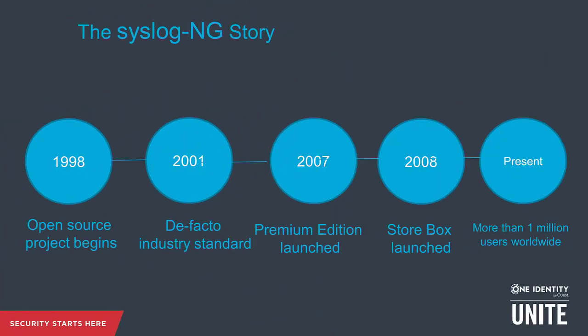And that brings us to our part in this story. SyslogNG has been there since the very beginning. Starting out as a project by a Hungarian grad student, he built SyslogNG back in 1998. He and his partners formed Balabit and introduced the open source version of SyslogNG, which was widely accepted around the world and grew to become the de facto industry standard. By 2007, the Premium Edition was introduced, and then in 2008, SyslogNG Storebox — an appliance log management device that runs SyslogNG PE at its core — was introduced. In 2018, Balabit was acquired by One Identity, and that's how I got here.